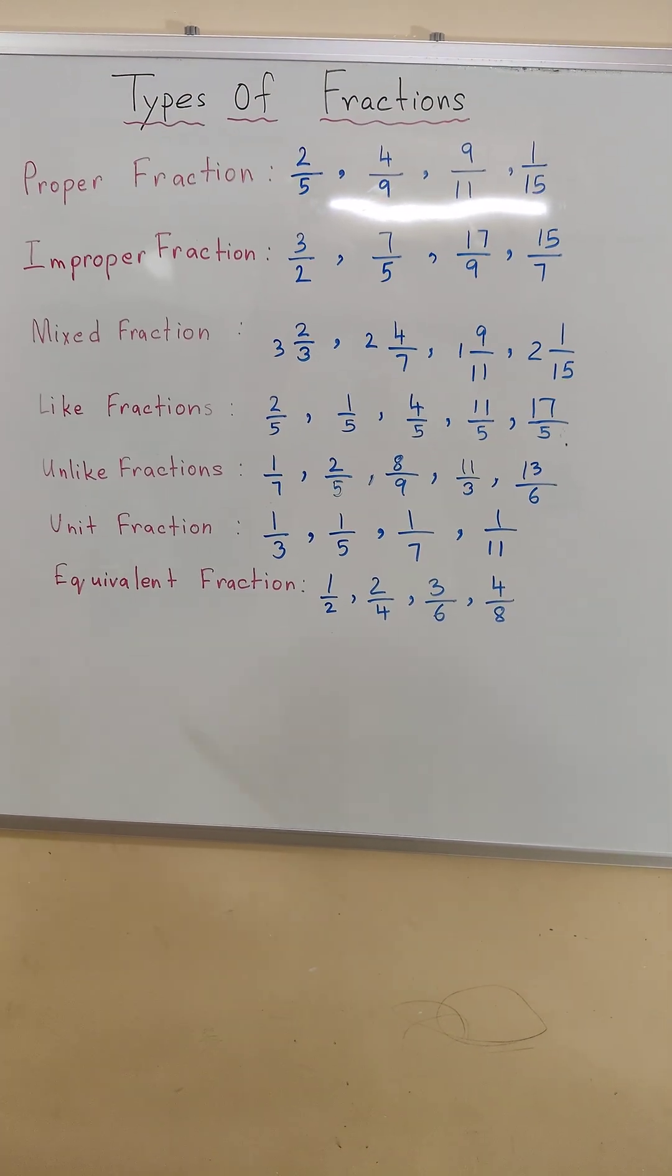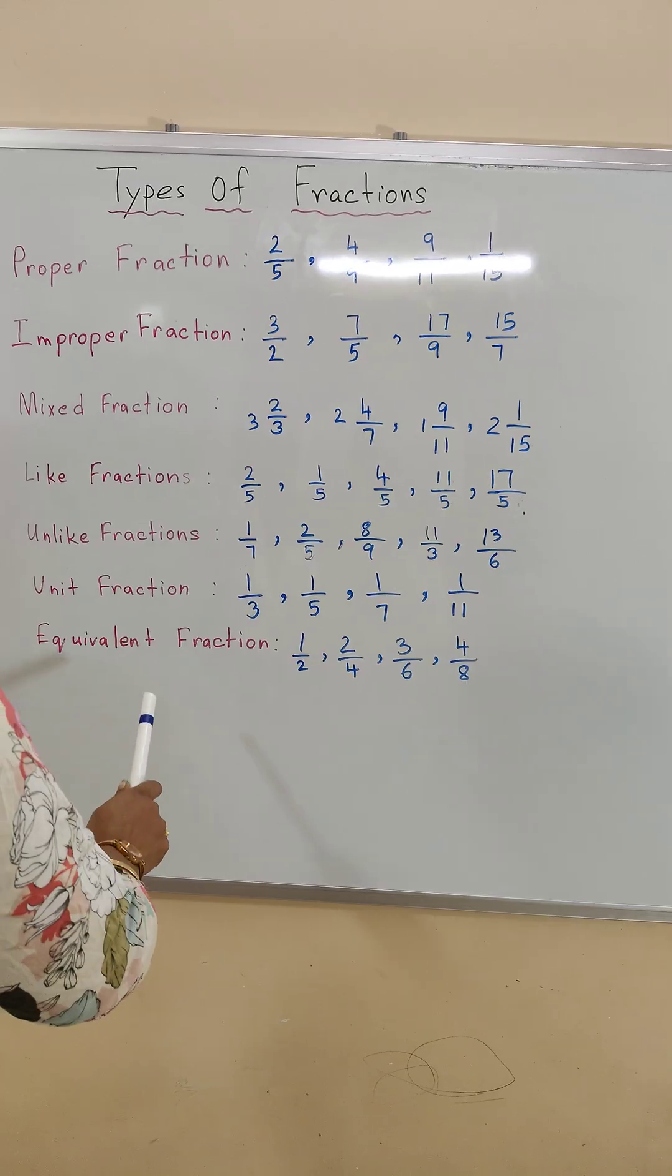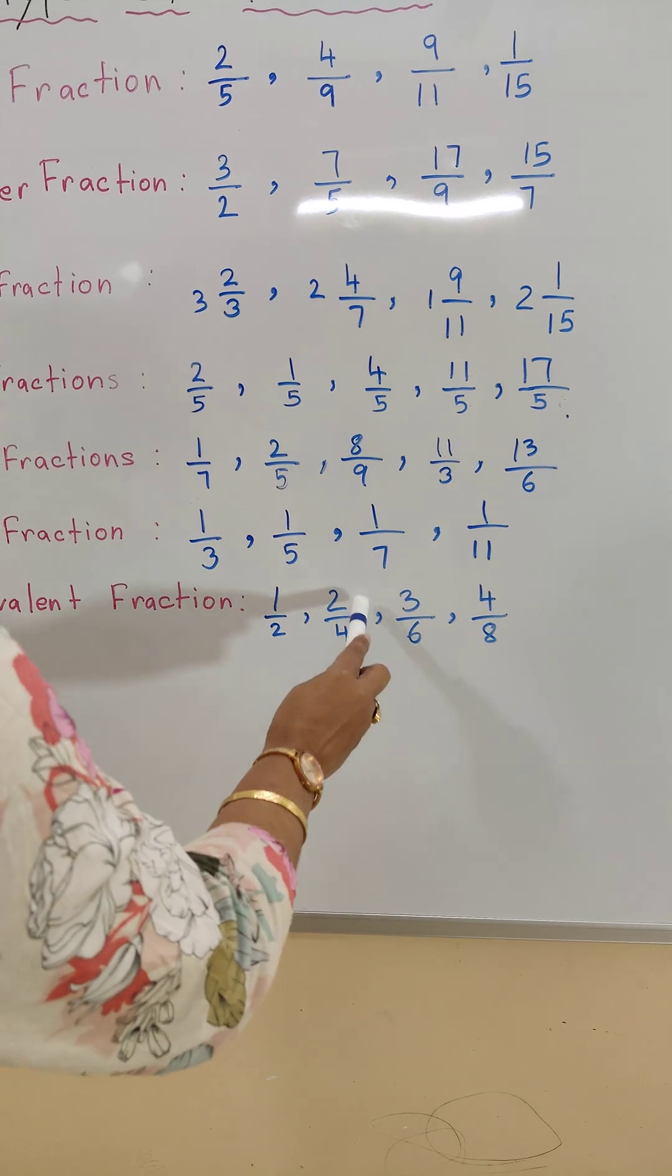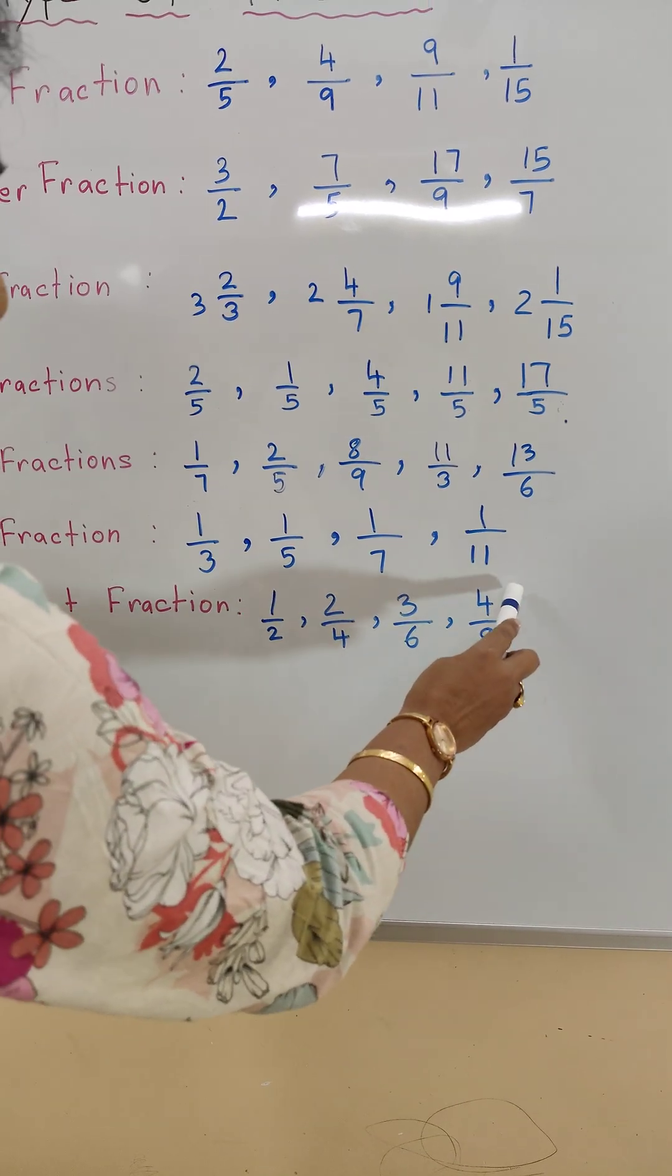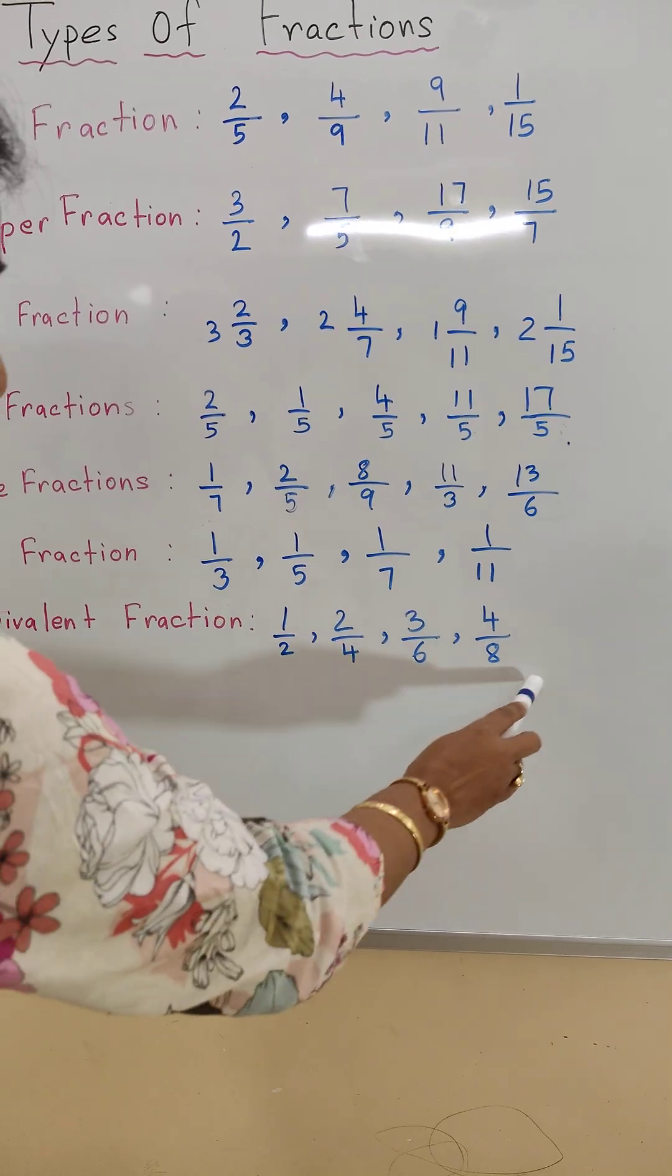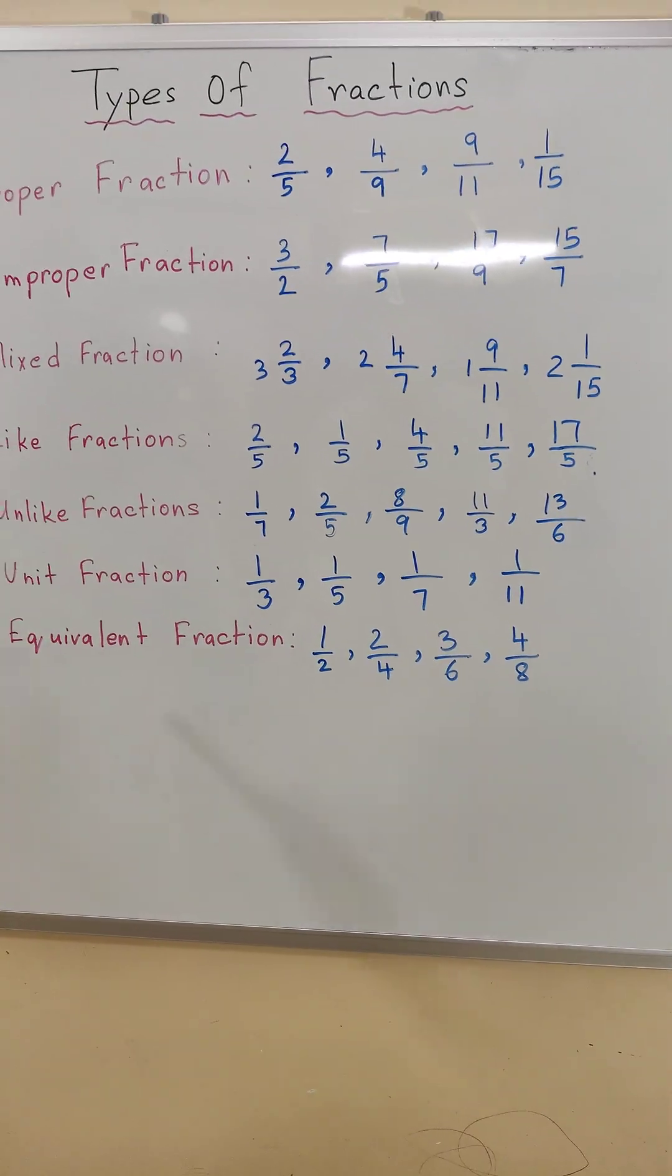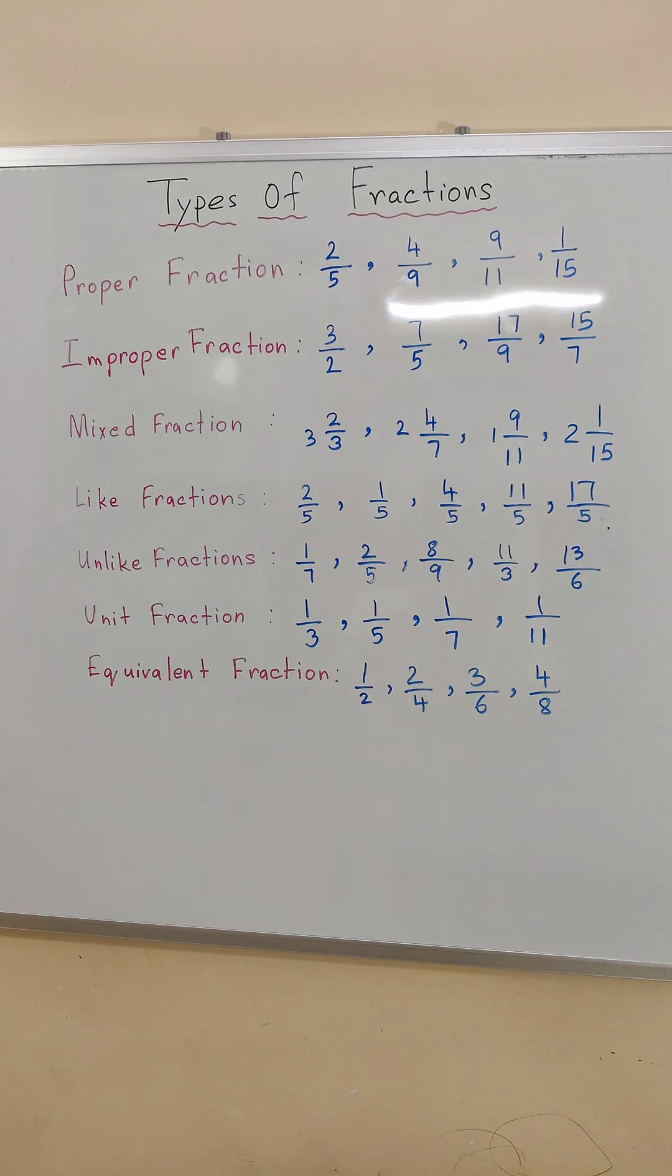Then the last one is equivalent fraction. Equivalent fractions are those fractions that have the same values. 1 by 2, 2 by 4, 3 by 6, 4 by 8. All these fractions have the same value that is 1 by 2. So these fractions are called equivalent fractions.